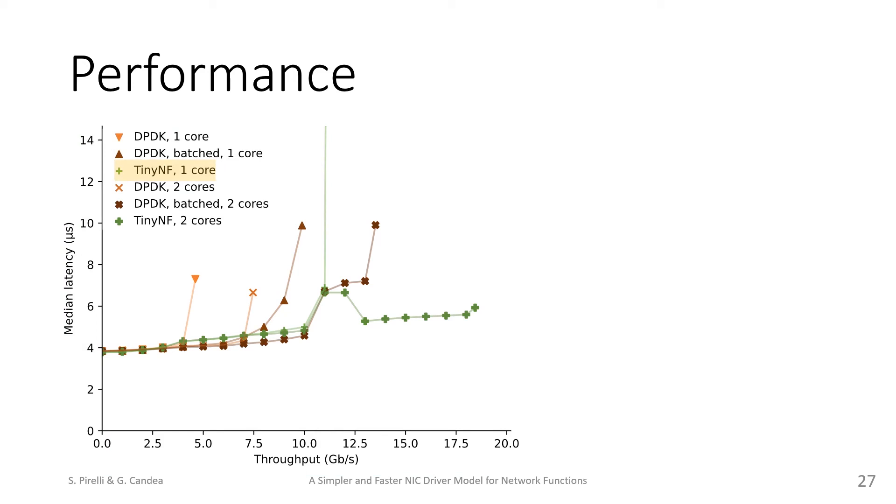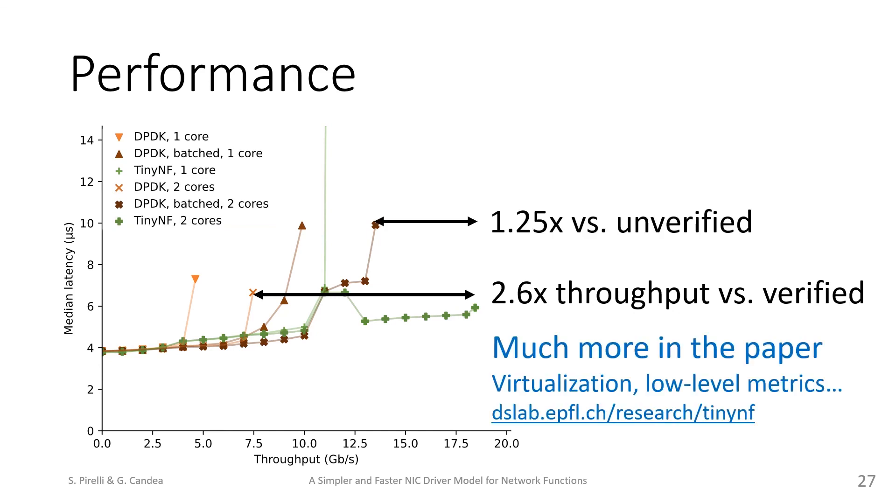The further right the driver goes, the more throughput it can sustain, while the further down it goes, the lower the latency. Overall, not only does TinyNF allow for 2.6 times the throughput of the verified driver subset, but it allows for 1.25 times the throughput of the full DPDK driver.